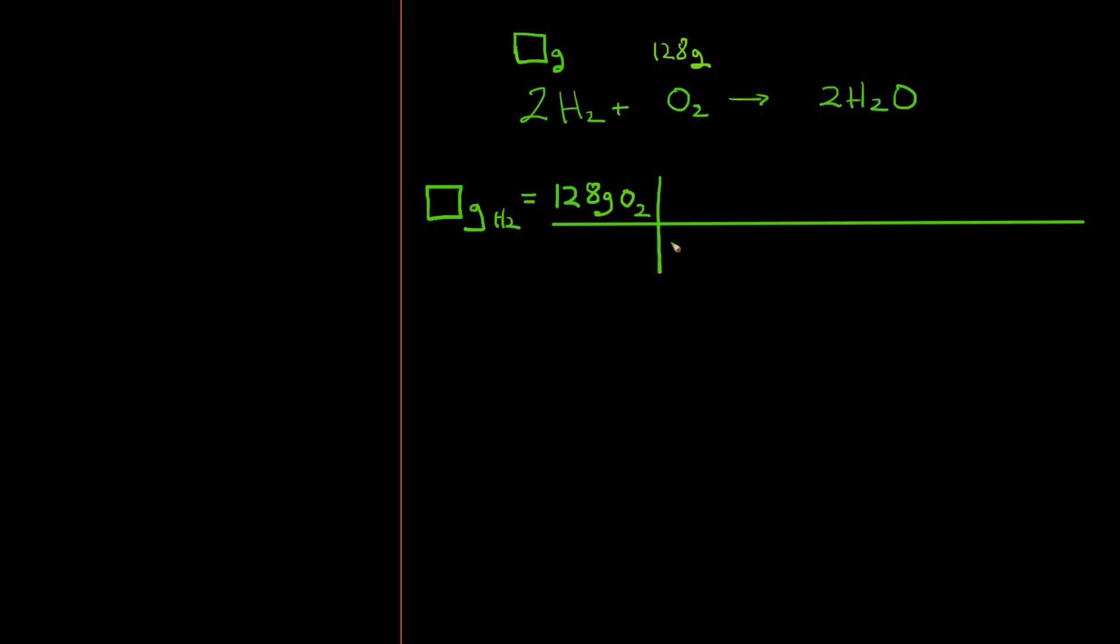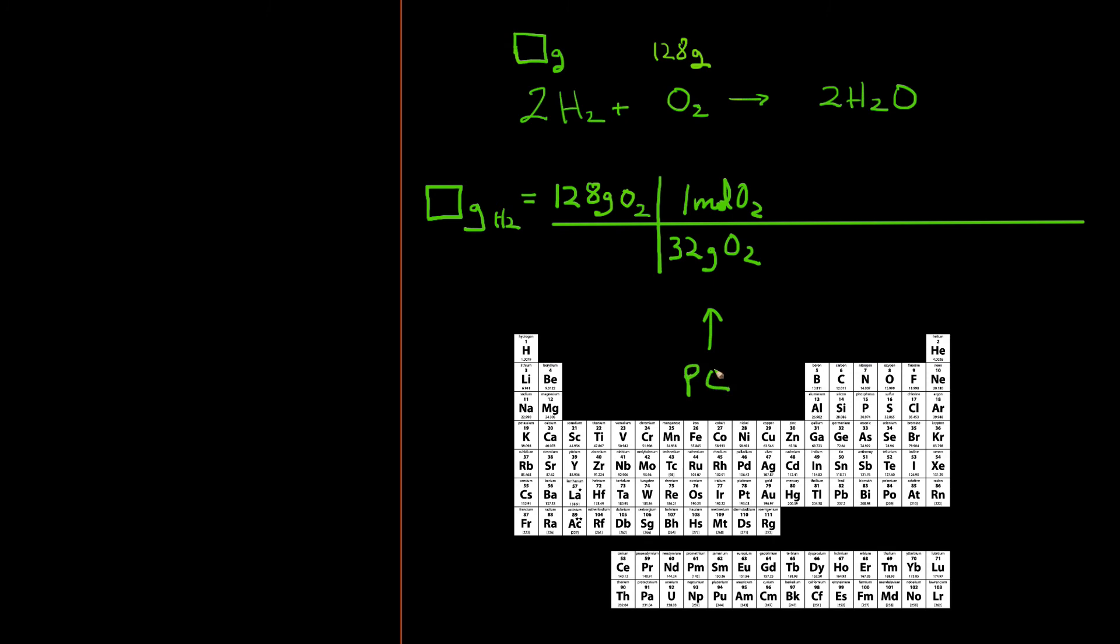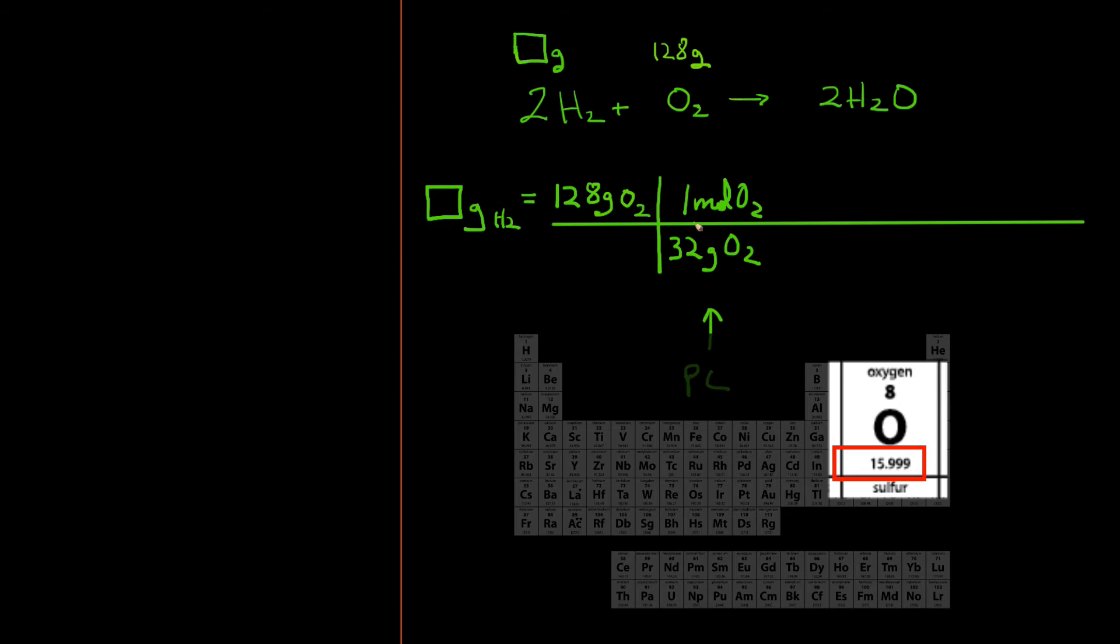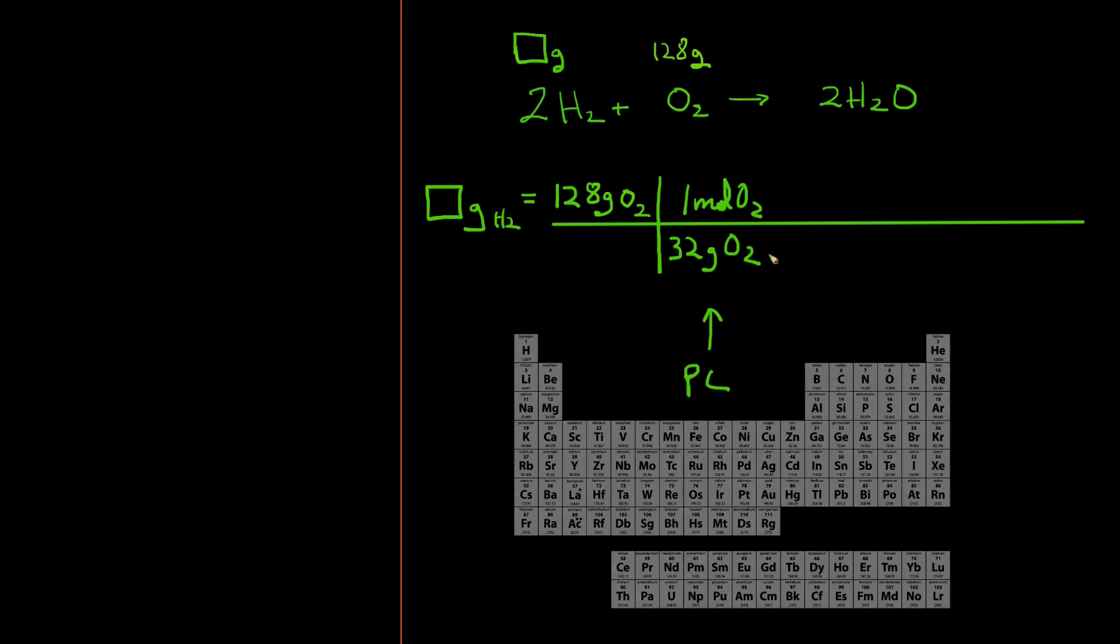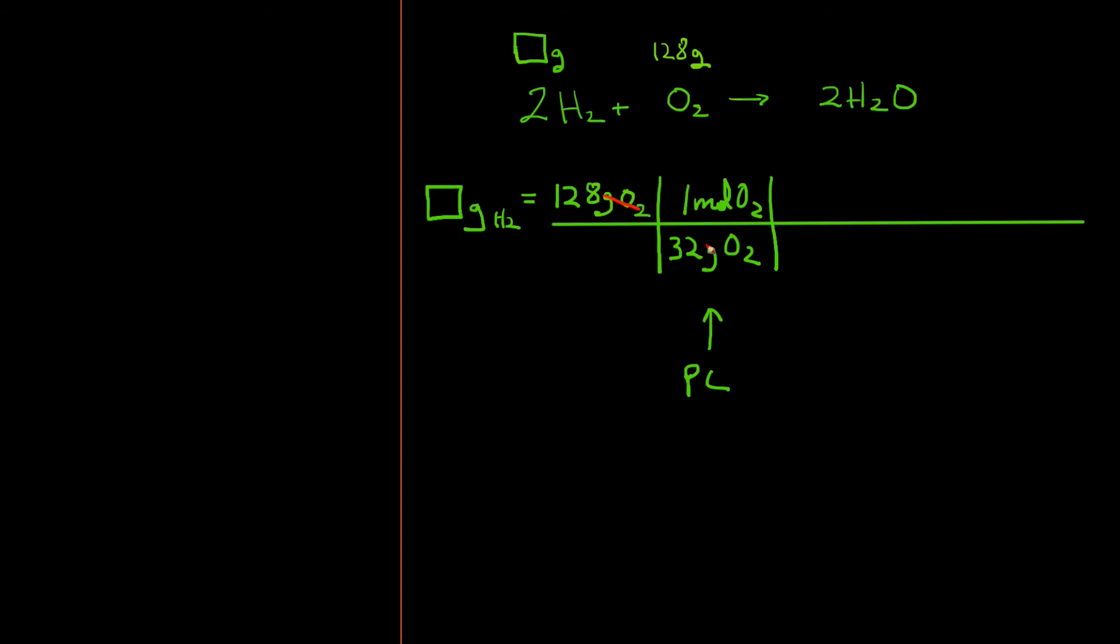Starting with 128 grams of O₂, I know there are 32 grams of O₂ for every one mole of O₂. I get that from the periodic chart. The periodic chart tells me that one mole of oxygen weighs 16 grams, so one mole of O₂ is going to weigh 32 grams. Note that at this point I have now calculated moles of O₂, or put another way, I have worked my conversion from grams of O₂ to moles of O₂.